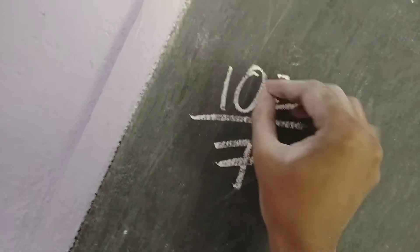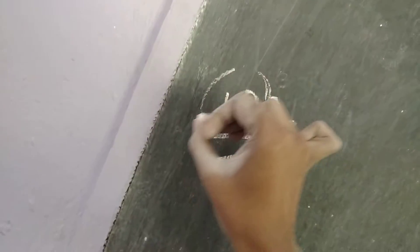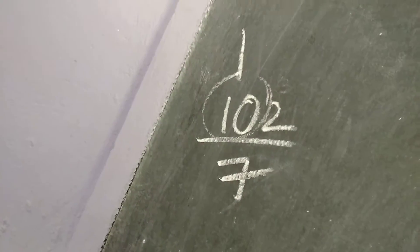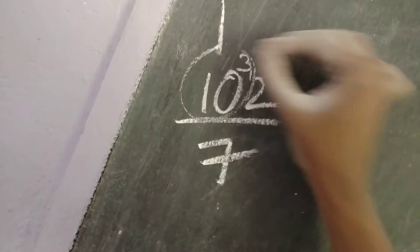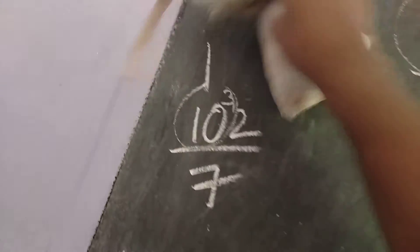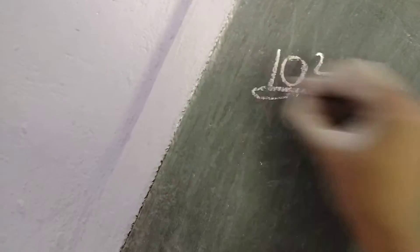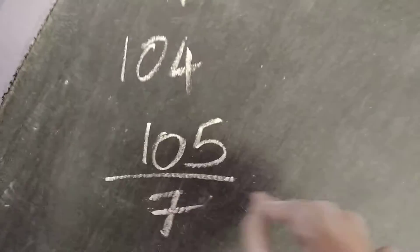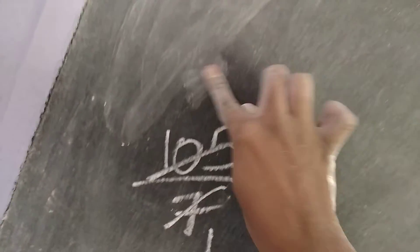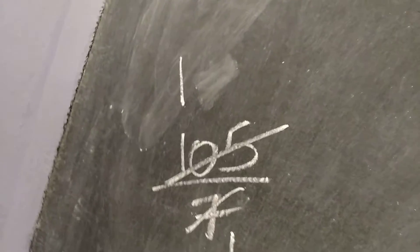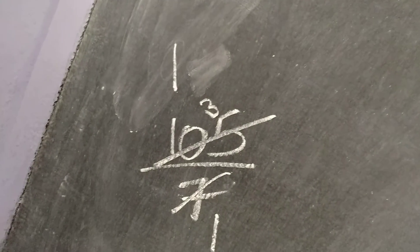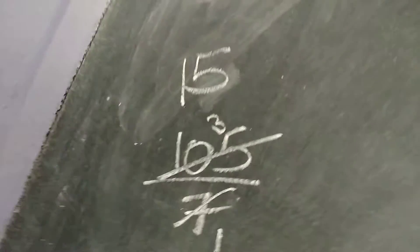Next, 102 divided by 7: 7 ones are 7, carry 3 — 32 will also not come. So as we go on, 103 and 104 also won't be divided. But check 105 properly: 7 ones are 7, carry 3. From 7 we count 8, 9, 10 — carry 3. 35 will come: 7 fives are 35. So 105 is completely divisible by 7.